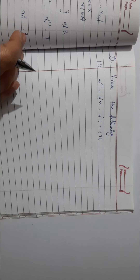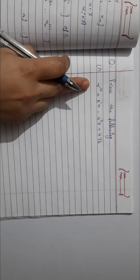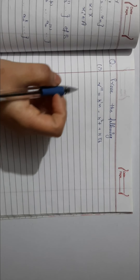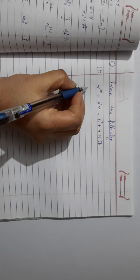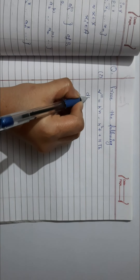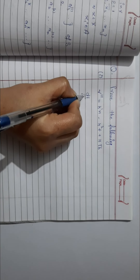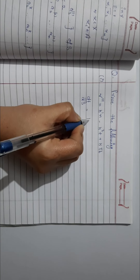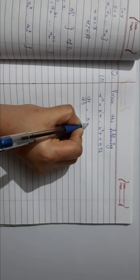Next question, look at this example. Prove the following conditions. The first part is R triple dash equals this. First of all, by the Frenet-Serret formula, we have dT over ds equals kappa N.